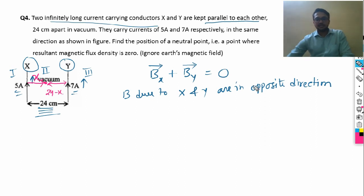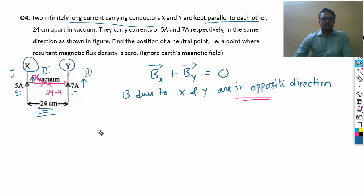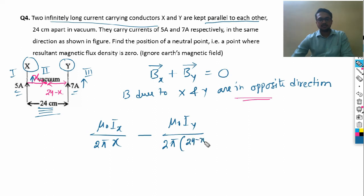Using the formula for an infinite wire: B = μ₀I / 2πd. Taking the field due to X as positive (entering), the field due to Y is negative (coming out). Setting them equal: μ₀ × 5 / (2π × x) − μ₀ × 7 / (2π × (24 − x)) = 0. No need to convert centimeters to meters since it is a ratio and terms cancel.